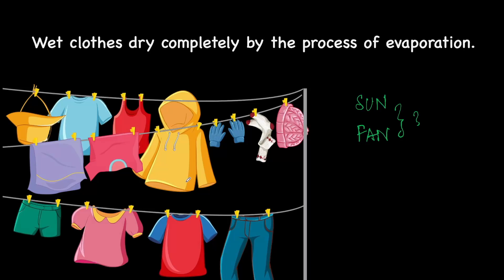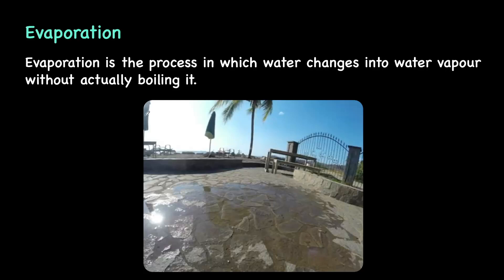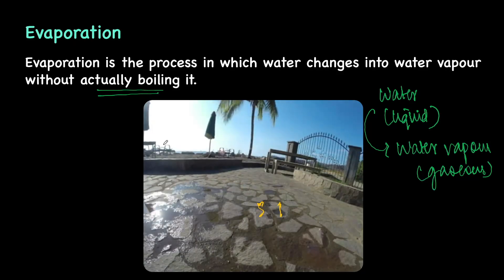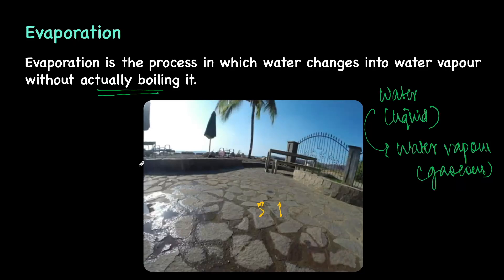Well, we know that washed or wet clothes dry completely by the process of evaporation. To quickly recall, evaporation is the process in which water in its liquid form gets converted to water vapour, which is the gaseous form of water. This entire process happens without actually boiling the water — it is a surface phenomenon where water molecules on the surface gain enough energy to overcome the forces holding them together, and as a result, water becomes water vapour.